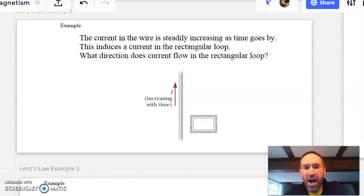Take a look at this example. Here we have a current in a wire that's steadily increasing as time goes by. And we say that this is going to induce a current in a rectangular loop. We know this is true because if the current increases as time goes by, so if I showed you a graph of current versus time, whether it's something like this or whether it's an exponential or anything, this just keeps getting more and more.